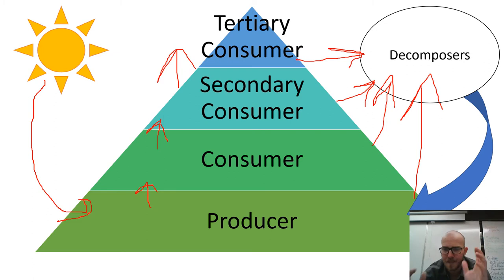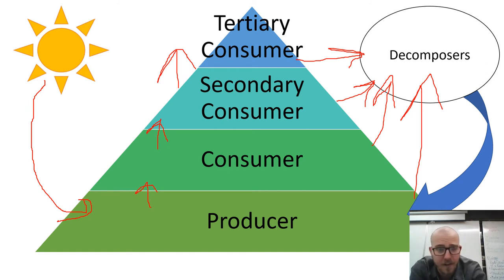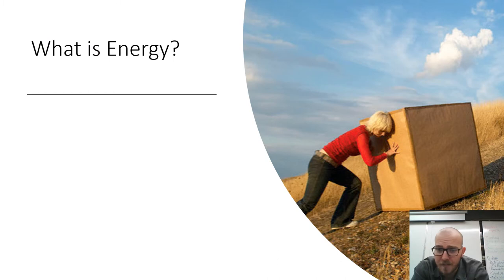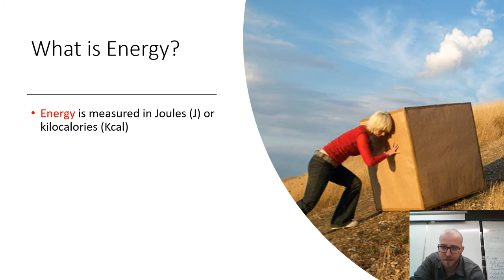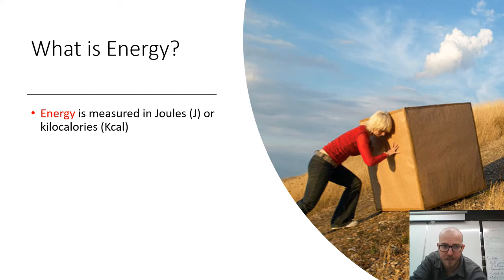Now we're going to put some math into this energy pyramid puzzle so we can understand it in a bit more depth. In order to do that, we need to talk about what exactly energy is. Energy is measured in joules or kilocalories. Kilocalories are typically used when we're talking about food systems, and joules are typically used when we're talking about physics. But we'll refer to joules and kilocalories.